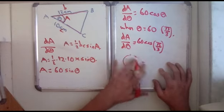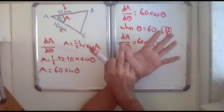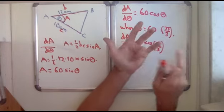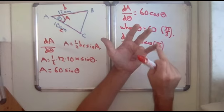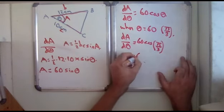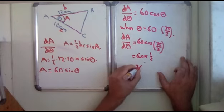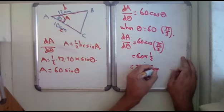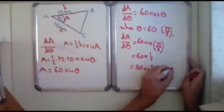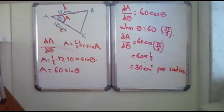I don't even need that. It's just on the thing. So 0, 30, 45, 60—cos is root 1 over 2, it's 1 half. Equals 60 times 1 half equals 30 centimeters squared per radian. Which is interesting, a radian is quite a big unit.